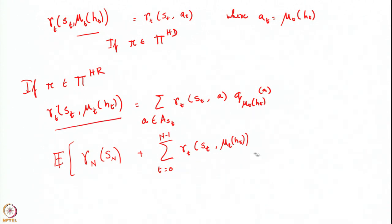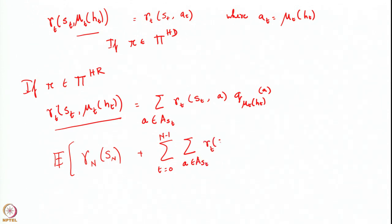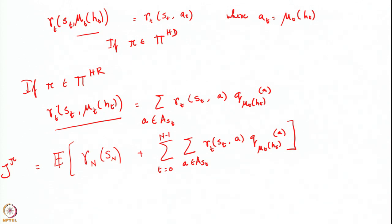The total expected reward is the expectation of: the terminal reward r_N(s_N) plus the sum over time steps t = 0 to N−1 of the double summation over actions of r_t(s_t, a) multiplied by q_{μ_t}(h_t, a). This quantity is denoted j^π, and in general it is a function of the initial state, so we write j^π(s_0).